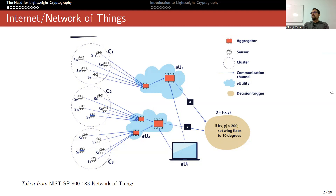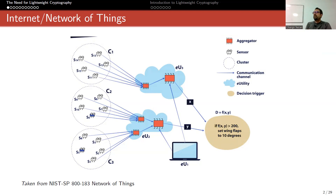Here's an example: they check two values — after you apply function f to inputs x and y, if the result is larger than 200, it says 'set wing flaps to 10 degrees.' This is generally what we have in mind when we talk about the Network of Things.